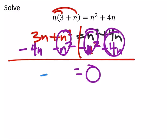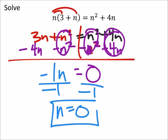And 3n minus 4n is a negative 1n. If we divide both sides by negative 1, not that everyone has to, but we see that n is 0. And if we checked, it would work on both sides.